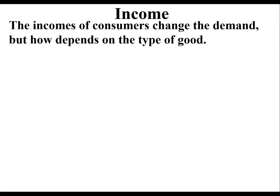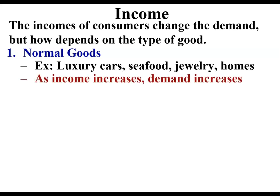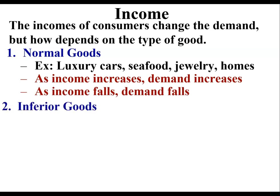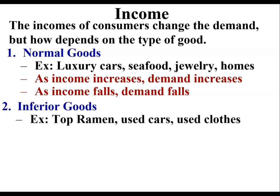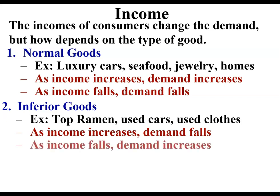The incomes of consumers change demand, but how depends on the type of good. A normal good is something you want to consume more of as you have more money — luxury cars, seafood, jewelry, homes. As your income goes up, the demand increases; as your income falls, the demand falls. Inferior goods — examples include ramen noodles, used cars, used clothes. As your income goes up, the demand for an inferior good falls. As your income falls, the demand increases.